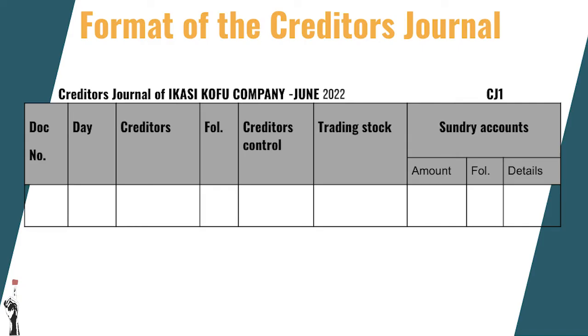Then we have the sundry accounts column. If there is not a column provided for a certain item purchased on credit, it is analyzed in the sundry accounts, along with a folio number. The last column is the details column, which has the name of the relevant general ledger account. Now that the theoretical part is over, let's get a bit more practical.